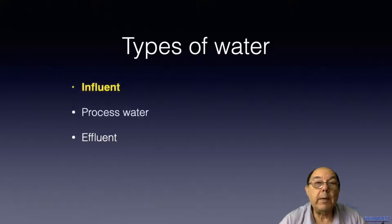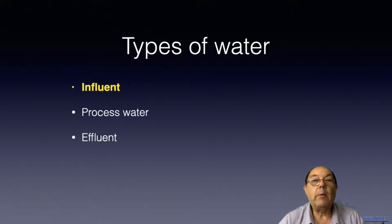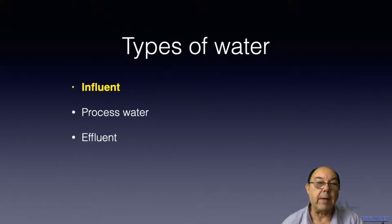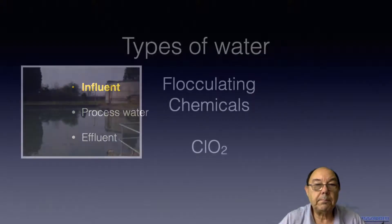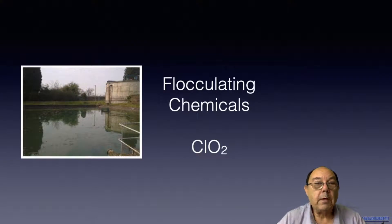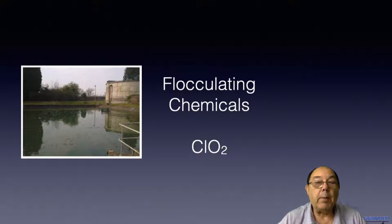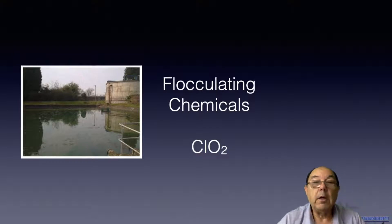What we're going to deal with in this particular tutorial is influent, and we're going to look at the equipment that's used for the treatment of influent. We often start with a mill pond, and in the mill pond we might choose to add some flocculating chemicals. Water that we take out of the mill pond we might treat with biocides — maybe things like chlorine dioxide.